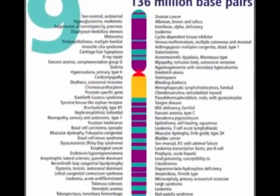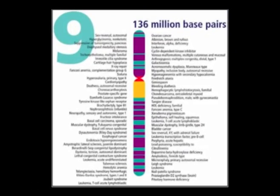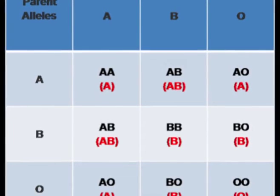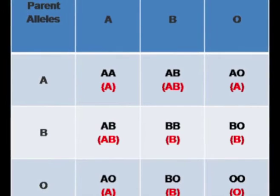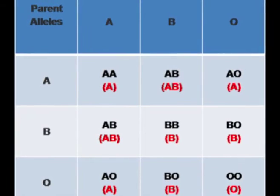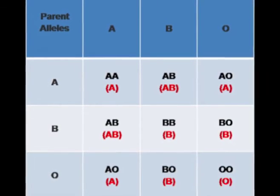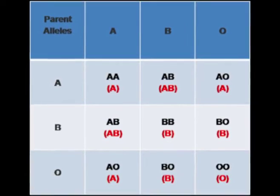ABO blood types are inherited through the genes on chromosome 9, and they do not change as a result of environmental influence during life. An individual's ABO type is determined by the inheritance of one of three alleles — A, B, or O — from each parent. Both A and B alleles are dominant over O. As a result, individuals who have the AO genotype will have an A phenotype. People who are type O have the OO genotype.